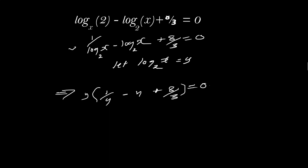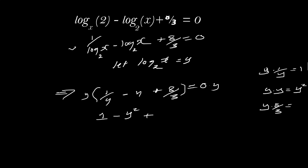Now simplify by multiplying both sides of the equation by Y to eliminate the denominator. Y times one over Y gives one. Y times minus Y gives minus Y squared. Y times eight over three gives plus eight over three Y. On the right hand side, zero times Y is zero.